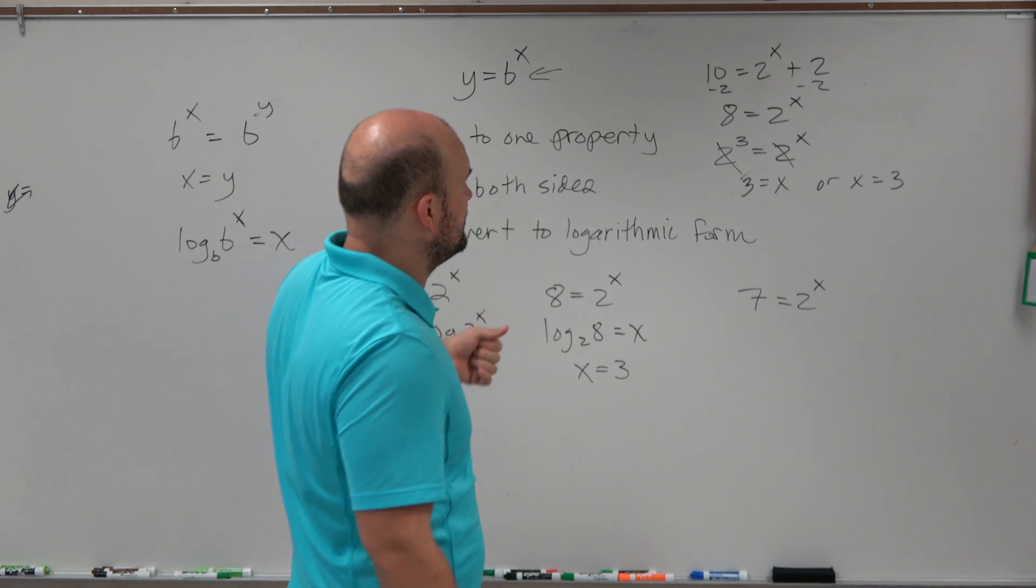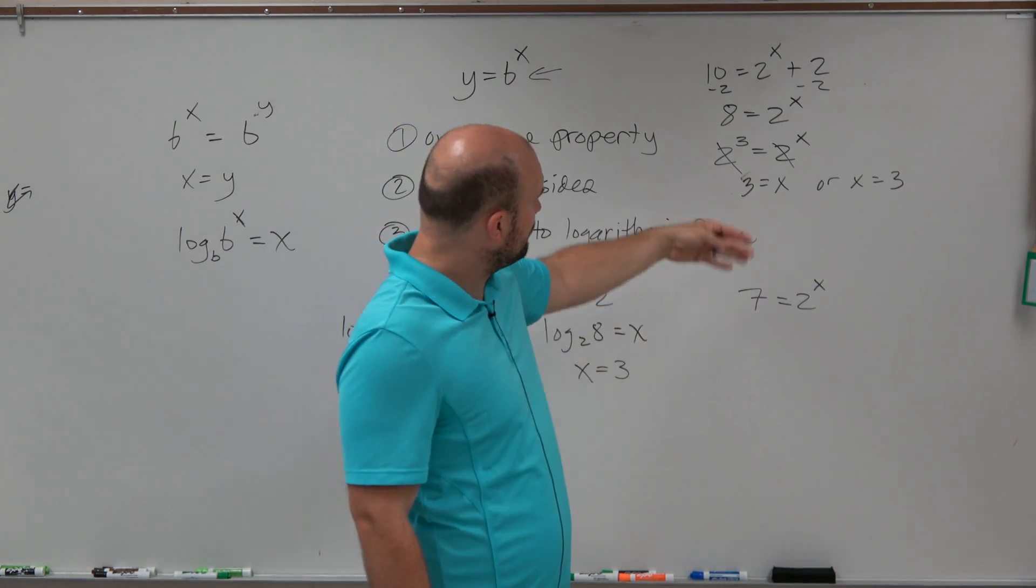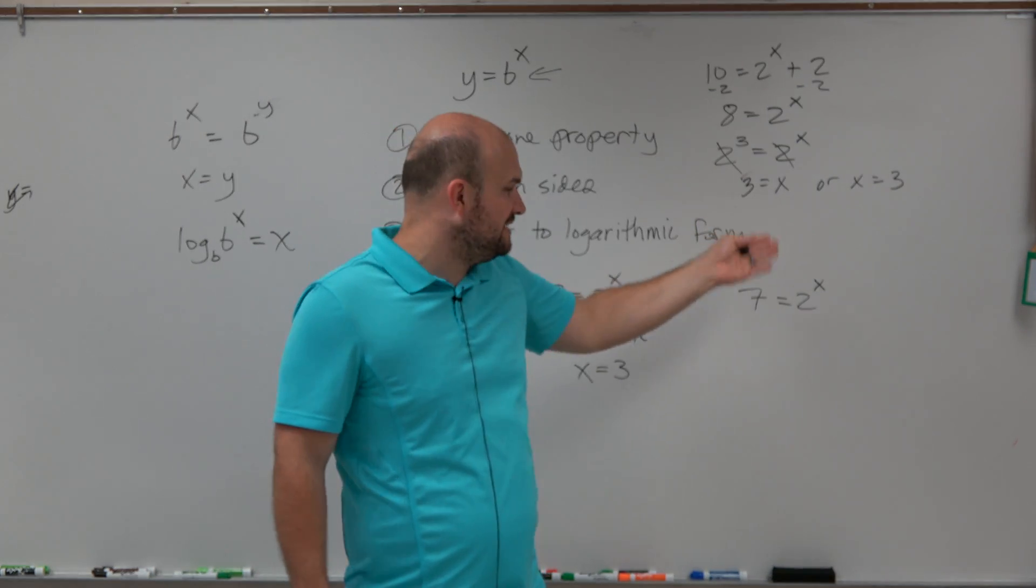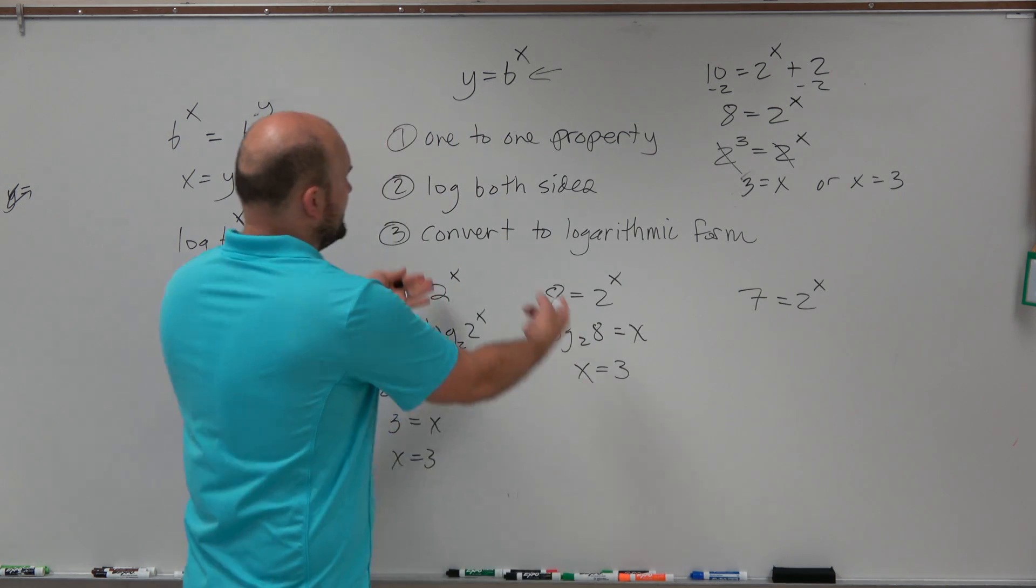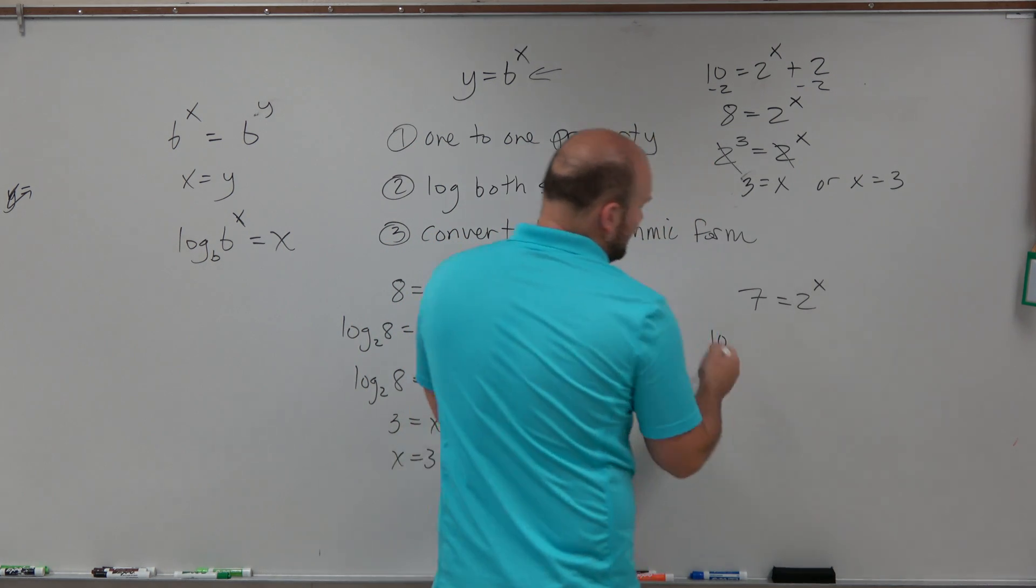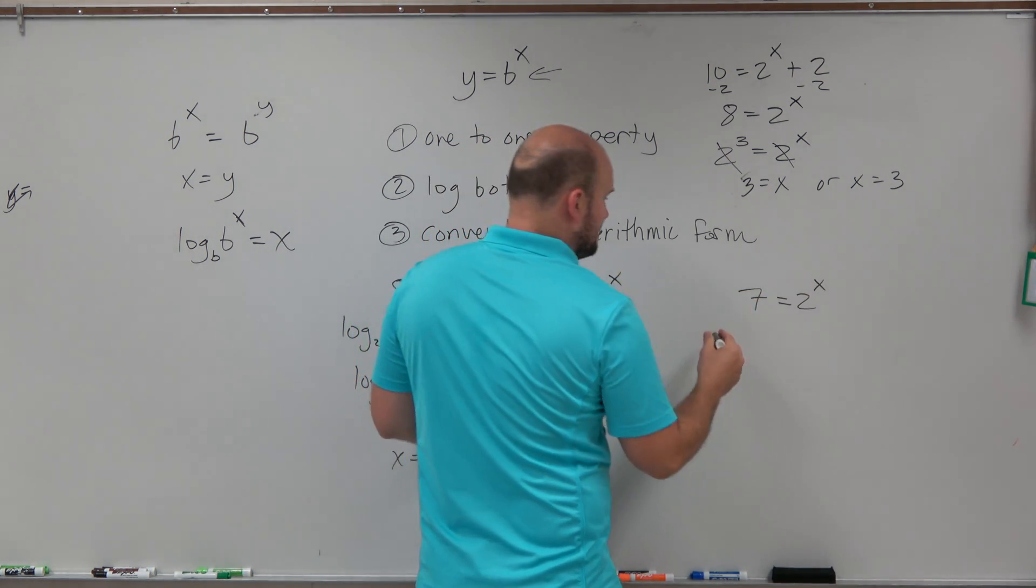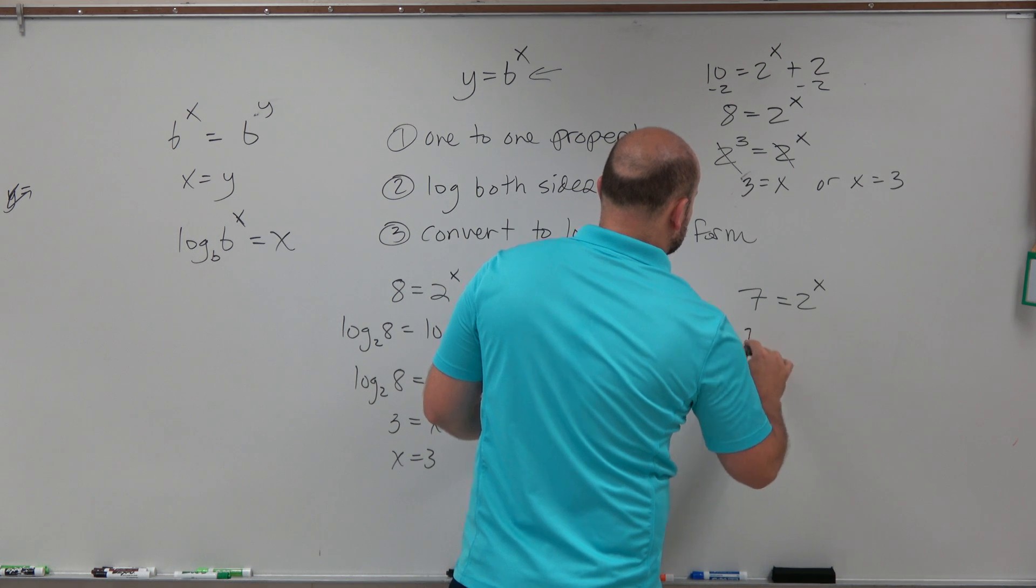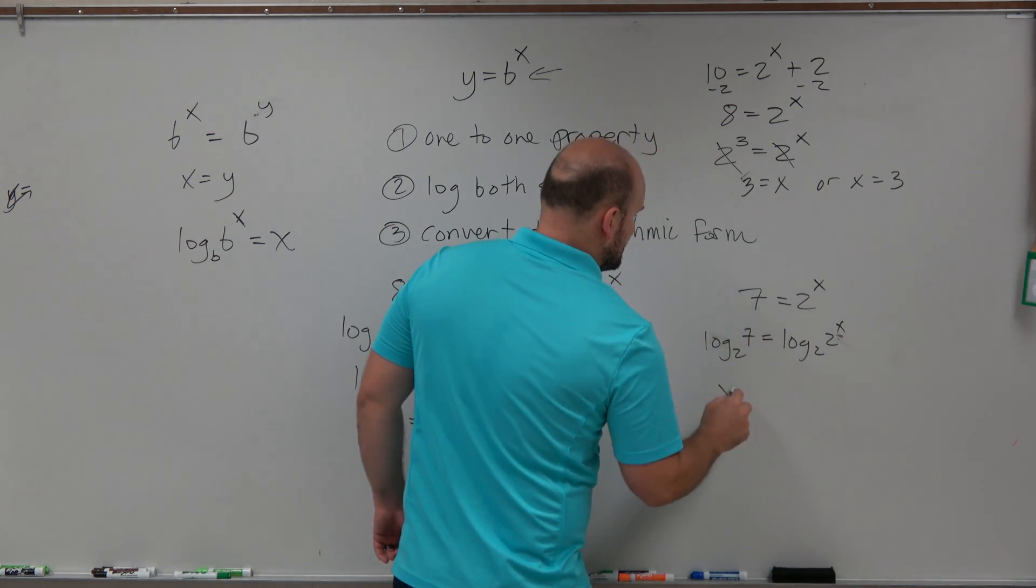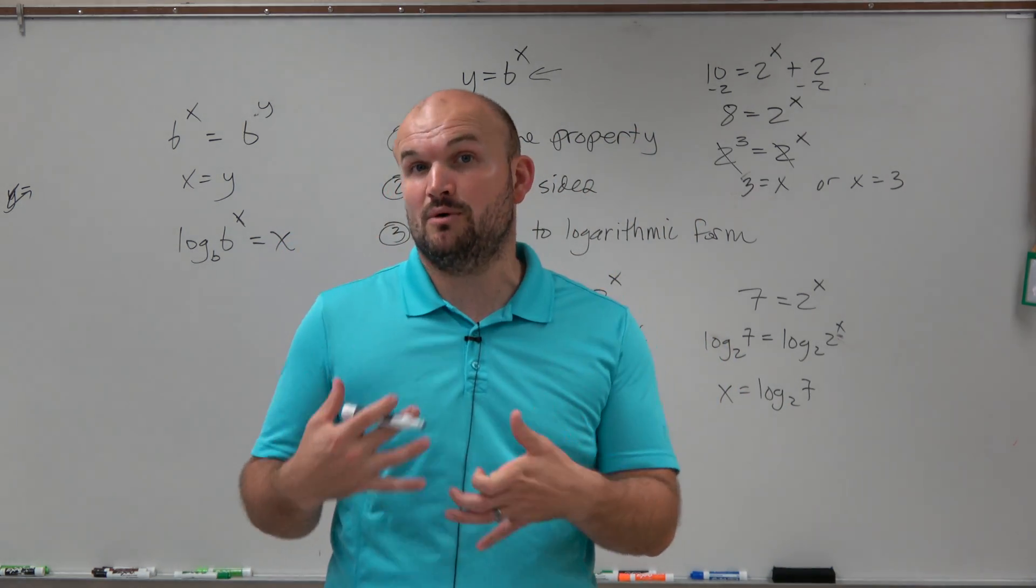However, usually, applying the one-to-one property is going to be the quickest and the easiest, especially once you get your familiarity with numbers. However, there will be exponential functions where you can't use the one-to-one property. We can't raise 2 to a power to get 7. So therefore, you'd want to either take the log of both sides or convert to logarithmic form. Either way, again, just make sure when you take the log of both sides, you're not taking the log base 7. You've got to take the log of your base where your variable is your exponent. So therefore, we would have log base 2 of 7 equals log base 2 of 2 raised to the x. So therefore, you have x equals log base 2 of 7.